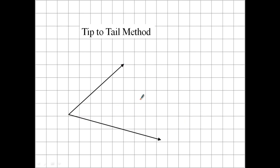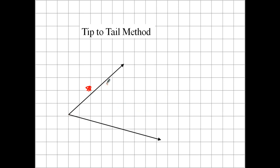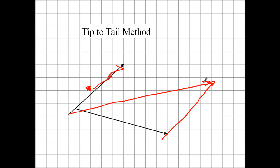Or the tip-to-tail method: we just slide this vector down to here and connect the points. Or you can slide that one up and also connect the points. It doesn't matter which one you move — you're still going to get the same resultant. You get the same resultant either way, no matter what you do. Slide one of them, same resultant.